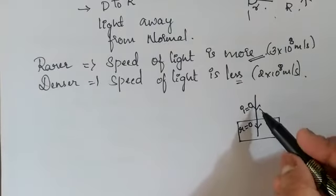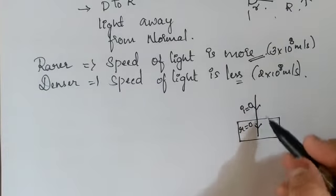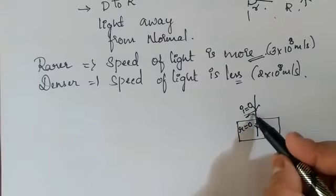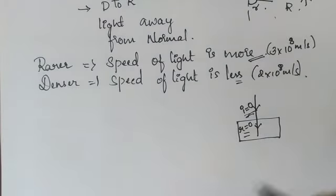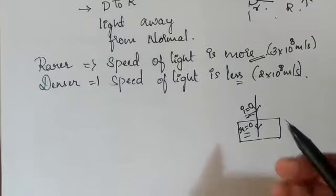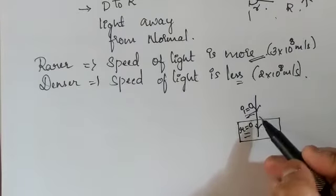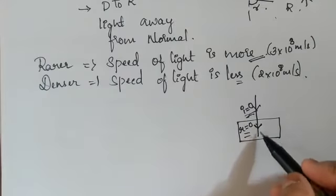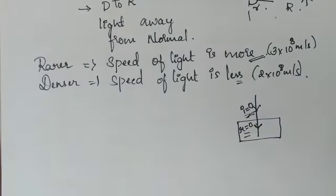When a ray of light travels along the normal, making an angle of incidence of 0 and angle of refraction of 0, there is no bending while entering another medium or when exiting from another medium.